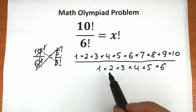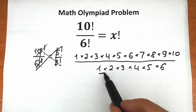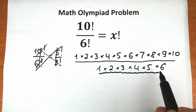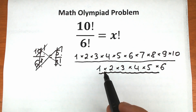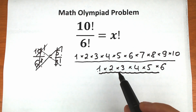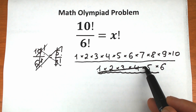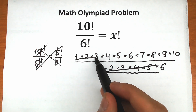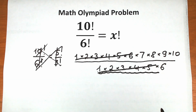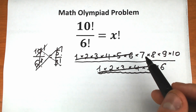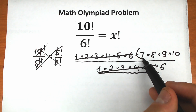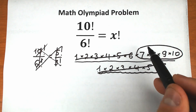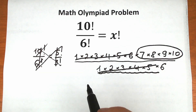If we look closely, we have absolutely the same product in our denominator and our numerator — from 1 to 6. So we can easily cancel this long product with the product from 1 to 6. As a result, we still have 7 times 8 times 9 times 10.